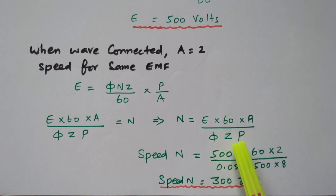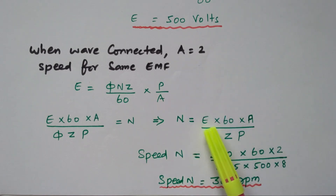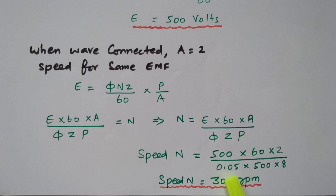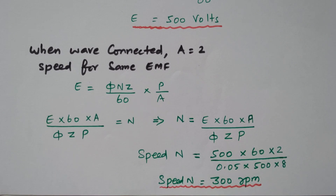All data are available; only the parallel path is now considered as 2. By simplifying, we get 300 RPM. So for the same machine and the same EMF, when it is changed from lap winding to wave winding, the speed is calculated as 300 RPM.